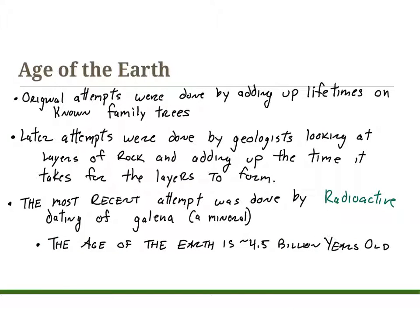The original attempts to gauge how old the Earth is were not very accurate. The first method used family trees or lineages, adding up the ages of people to determine how old the Earth was — most likely based on bloodlines of royalty, which is not very accurate. Later attempts were made by geologists looking at layers of rock and adding up the time it took for those layers to form.